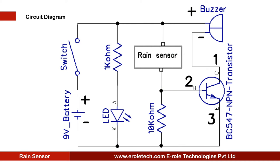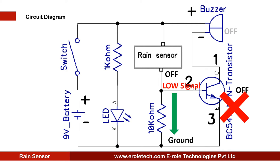When the rain stops, the base terminal of the transistor will not get the high signal. The 10 Kilo Ohm resistor will provide the ground or low signal to the base of the transistor. So the transistor will turn off and the buzzer will come into silent mode.